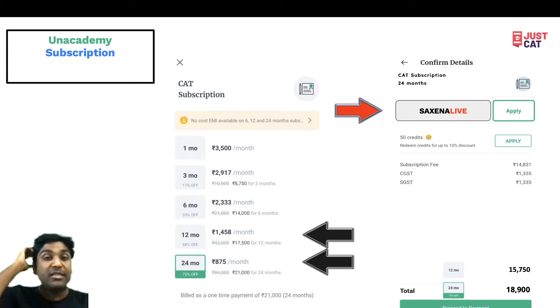For people writing CAT this year, I think three or six month plans make more sense. There are also no-cost EMI options available on 6, 12, and 24 month subscriptions.